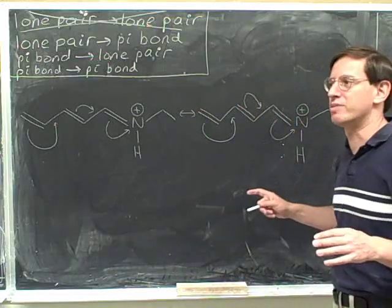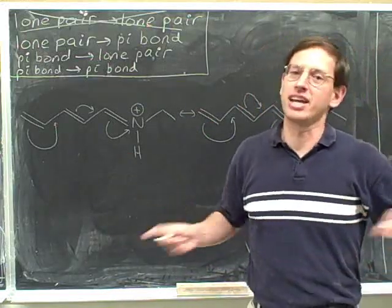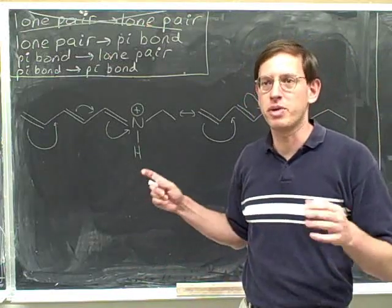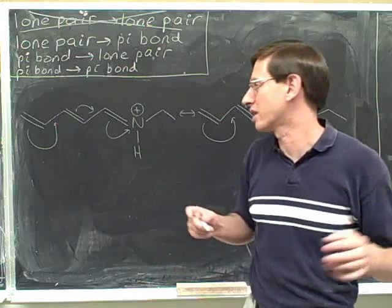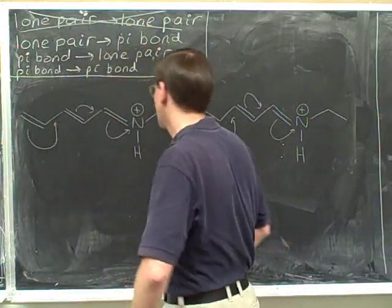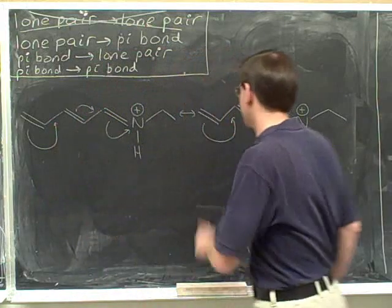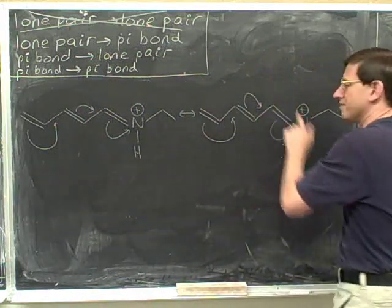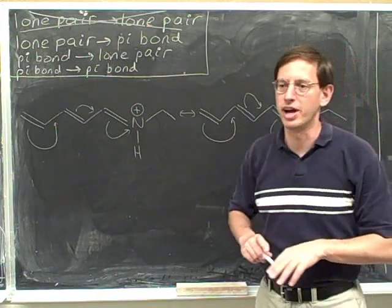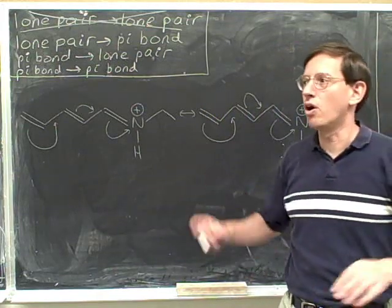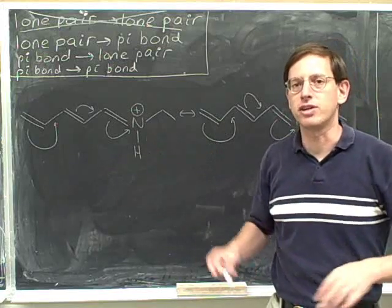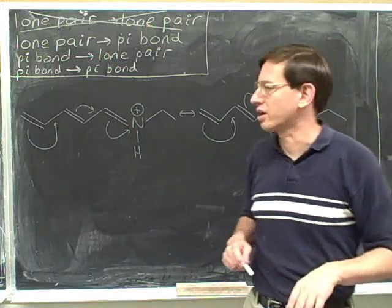For example, count the carbons. It's amazing how often people will add a carbon or drop a carbon. The surest way to make sure you're not doing that is to count the carbons: one, two, three, four, five — five carbons on the left. One, two, three, four, five — five carbons on the right. We got that right. And two carbons on the right side. Anytime the structure is at all complicated, make sure that you count the carbons to make sure you haven't added or dropped a carbon.